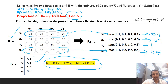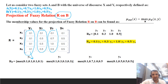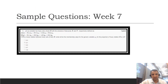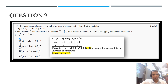For the projection of fuzzy relation R on B, instead of rows we compute column-wise maximums. The maximum values are 0.1, 0.3, 1, and 0.5 for each column respectively. We write these values and arrange them as the final projection of R on B. For the sample question, the membership value for generic variable x₁ in the projection of fuzzy relation R on A is 0.1.